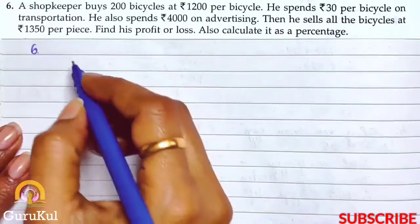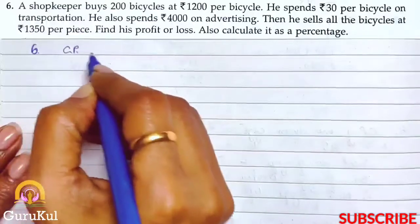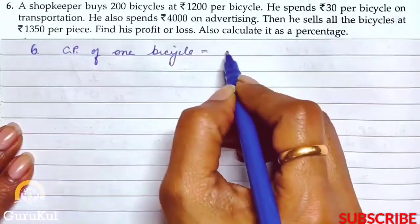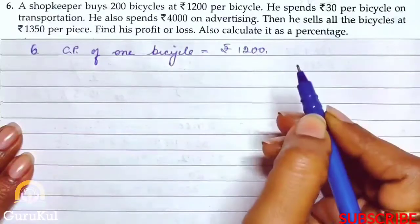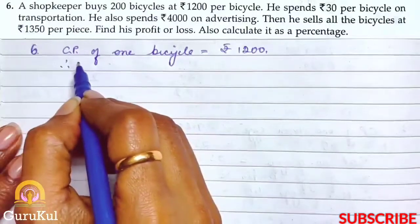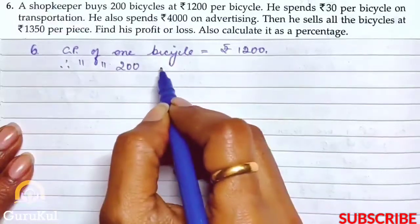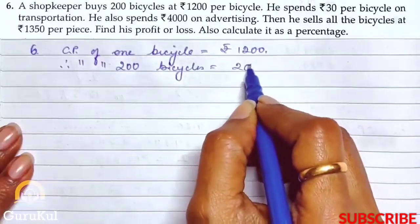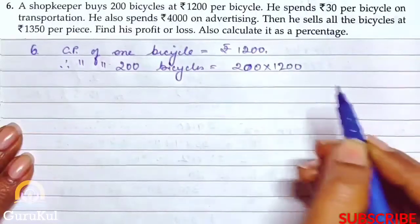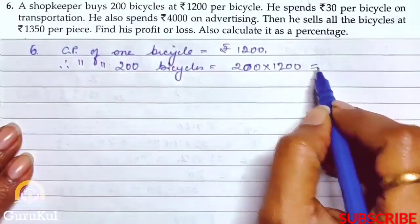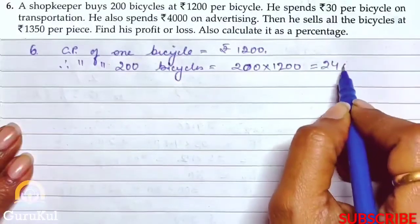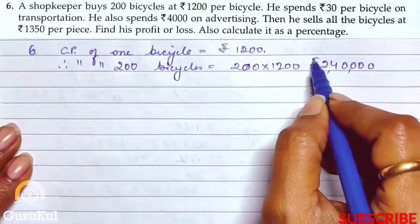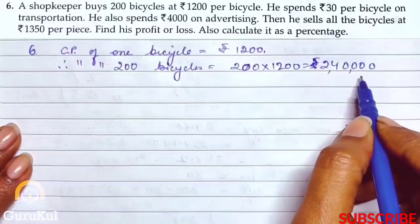Let's start. Cost price of one bicycle is rupees 1,200. Therefore, cost price of 200 bicycles is equal to 200 into 1,200. That gives us — 2 twelves are 24 and 4 zeros — so that gives us rupees 2,40,000.